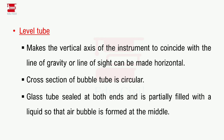That is why this point is very important. The level tube makes the line of sight horizontal. The air bubble must be centered in the bubble tube. We have to keep the line of sight horizontal. The bubble tube is a circular glass tube.